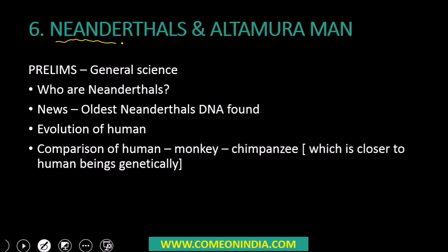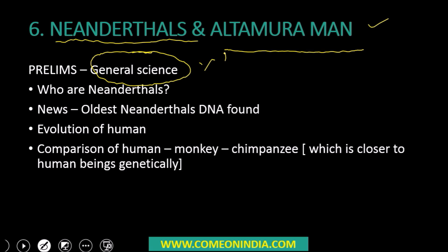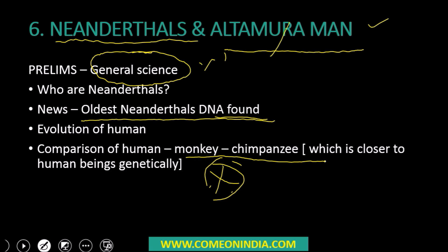The last topic is Neanderthals and the Altamura man. This is only important for general science and prelims, not for mains. You should know who Neanderthals are and how their evolution is very closely related to human evolution. Recently, the oldest Neanderthal DNA was found in Altamura, a place located in South Italy. This topic is important for prelims because the evolution of human beings is linked to the evolution of other mammals like monkeys and chimpanzees, and which animal is most closely related to human evolution.